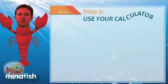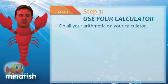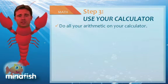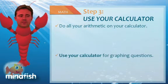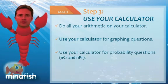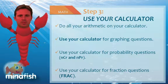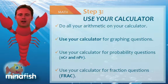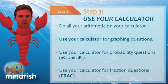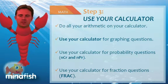Step three: use your calculator. You need to use your calculator for all arithmetic. There's absolutely no excuse for making an addition, subtraction, multiplication, or division mistake when you've got a calculator sitting right next to you. Use your calculator for probability questions, including permutations and combinations, because these oftentimes can take up too much time if done by hand. And then use your calculator to do all fractions. The frac button, which is under math in the first menu on your graphing calculator, is a very helpful button to cut down on arithmetic mistakes related to fractions.